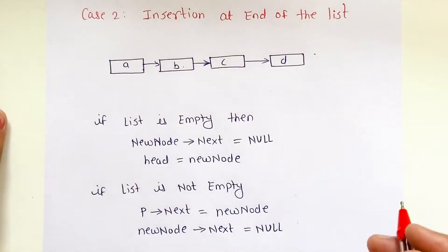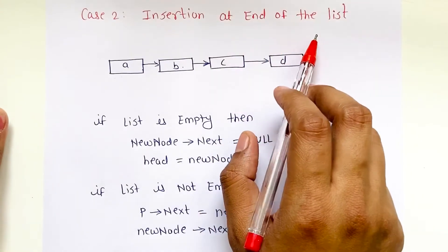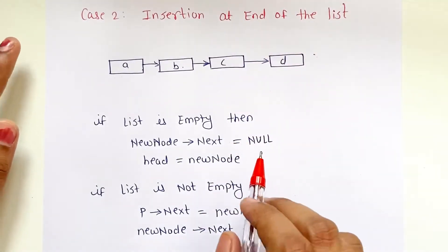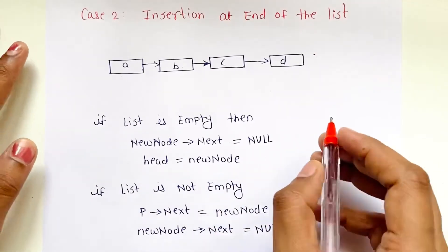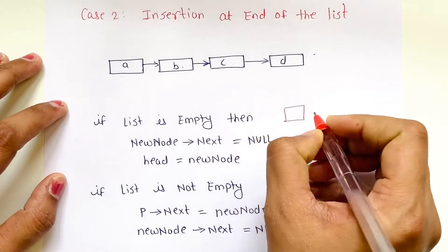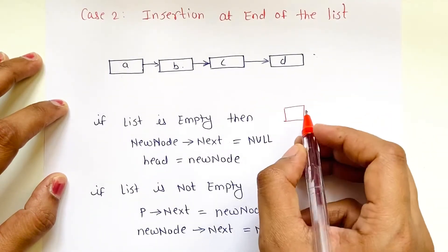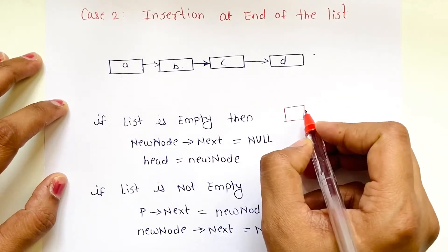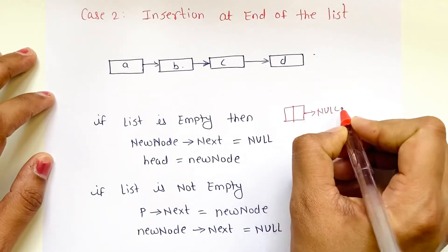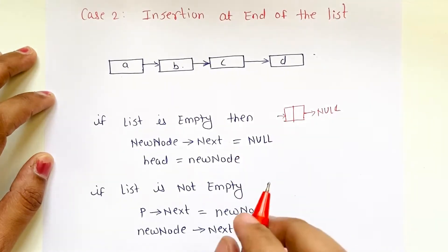Now let's see the second case: insertion of a node at the end of the linked list. Again, first check whether the list is empty or not. If your linked list is empty, you have to make the next field of this new node null and point the head to this new node.